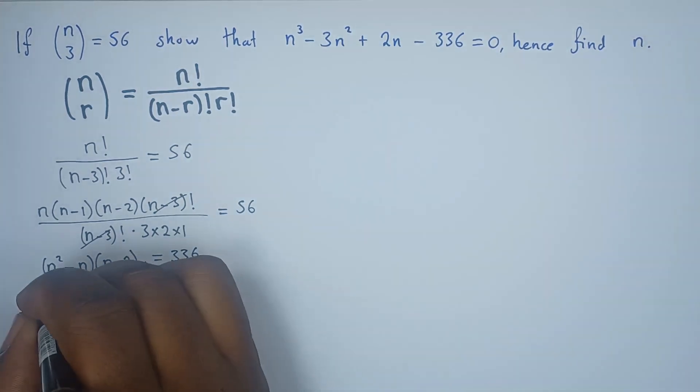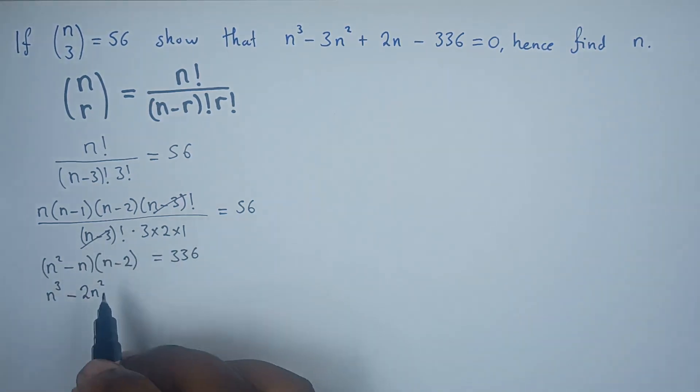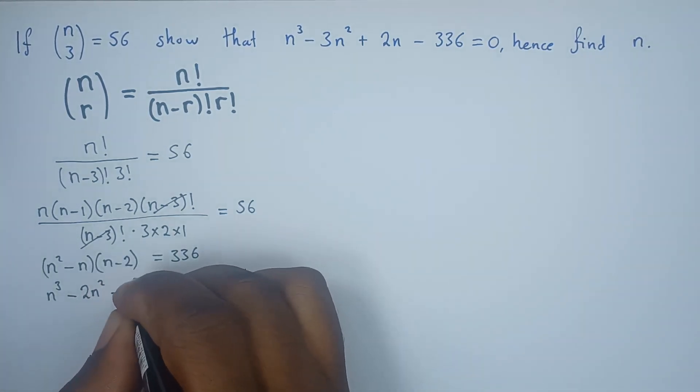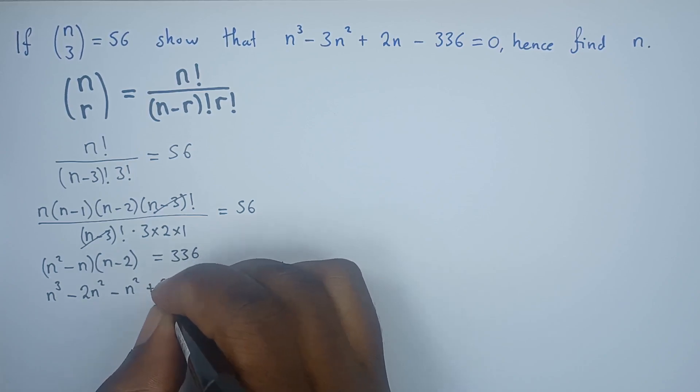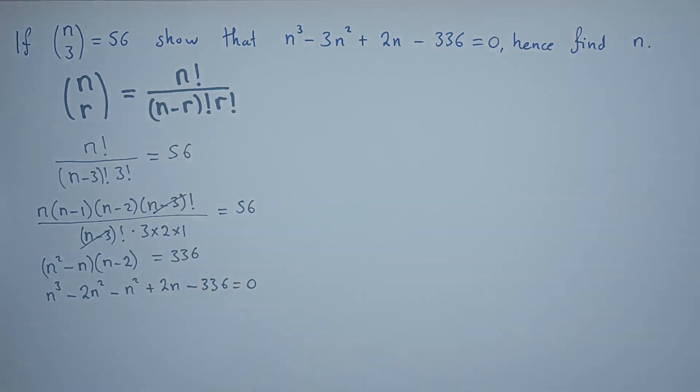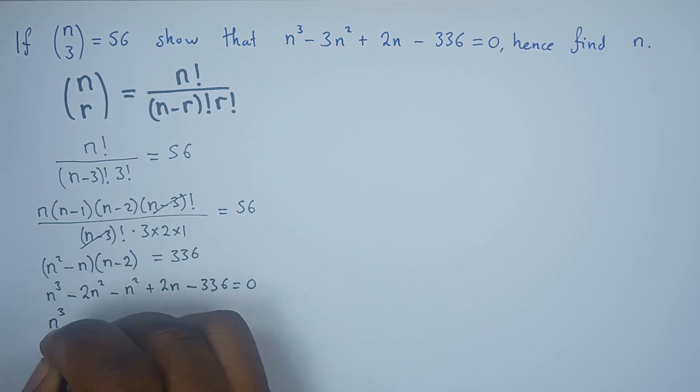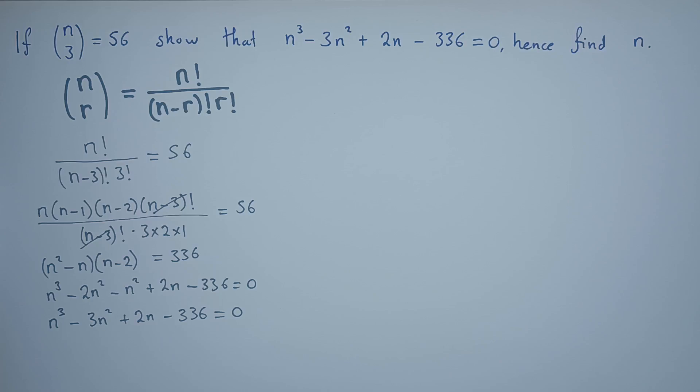Let's continue expanding here. So n² times n will give us n³. n² times -2 will give us -2n². -n times n is -n². -n times -2, negative negative, so it will become positive 2n minus 336. All this equals 0. So just push this guy to the other side. This means that n³ minus these two, which will give us -3n² plus 2n minus 336, all this equals 0. So hence shown.